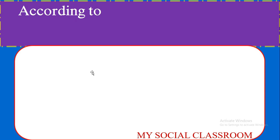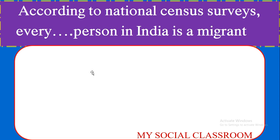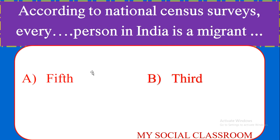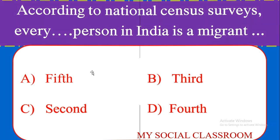According to the National Census, every how many persons in India is a migrant? Options: Fifth person, Third person, Second person, Fourth person. Correct answer: Fourth person.